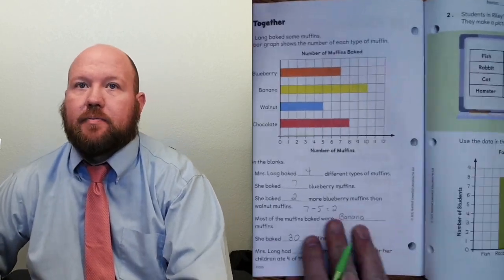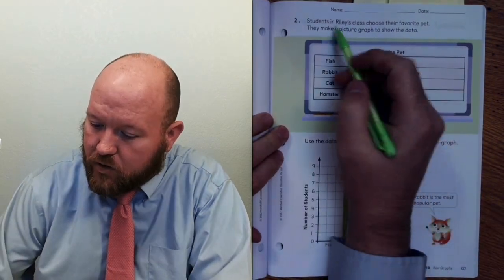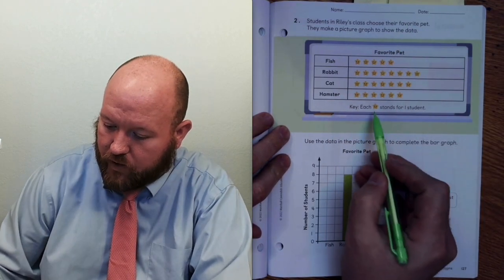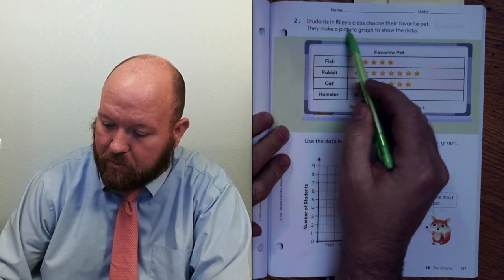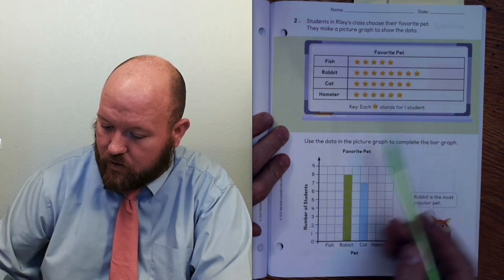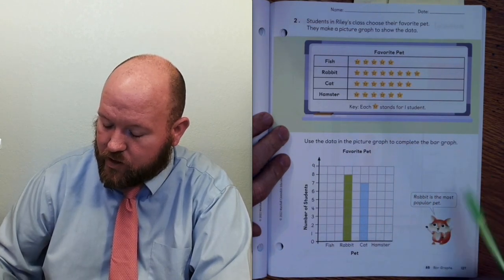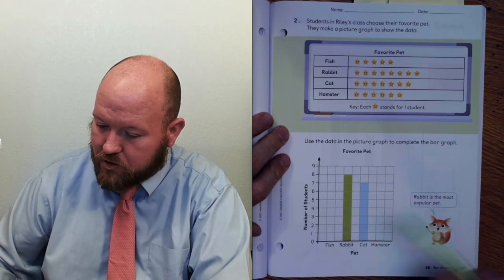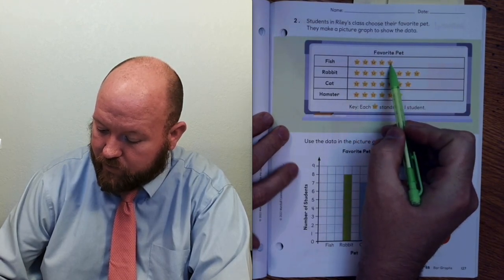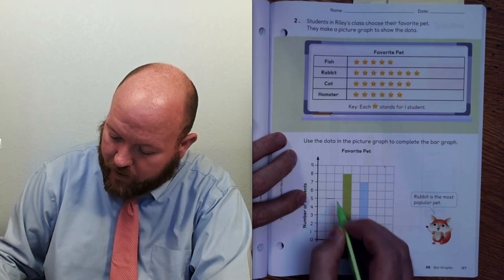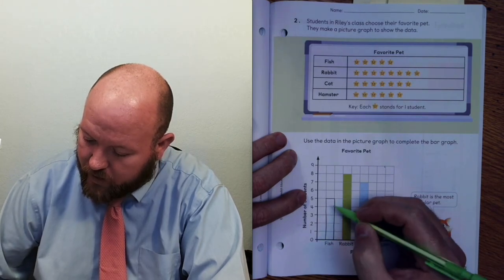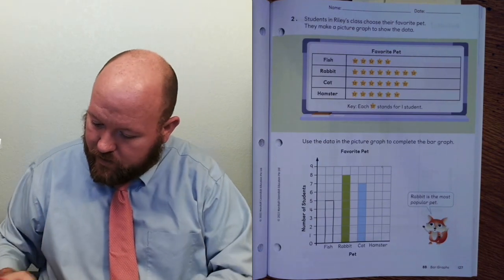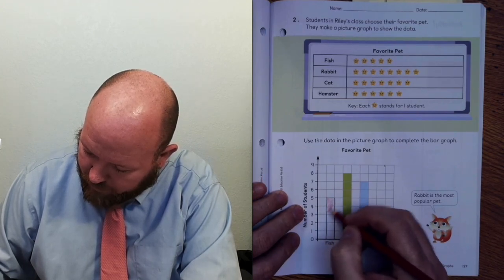Let's look at page 127. Students in Riley's class chose their favorite pet — fish, rabbits, cat, and hamster — and each star represents one student. They made a picture graph to show the data. Use the data in the picture graph to complete the bar graph. We need to do fish — there are 1, 2, 3, 4, 5 fish. We draw a line straight across at 5 and then fill in the bar. You could just use a pencil, but I'll do it in red colored pencil.